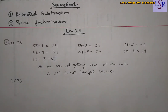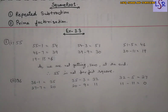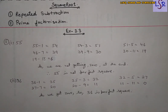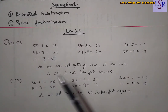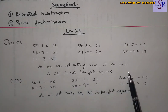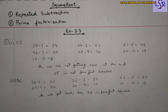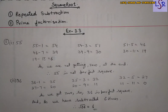Now let's take 36. We are going to do the same thing. In this case we are getting zero at the last step, which means 36 is a perfect square. If you want to find the square root of 36, we count how many times we subtracted: 1, 2, 3, 4, 5, 6 — we subtracted 6 times. This means √36 = 6.